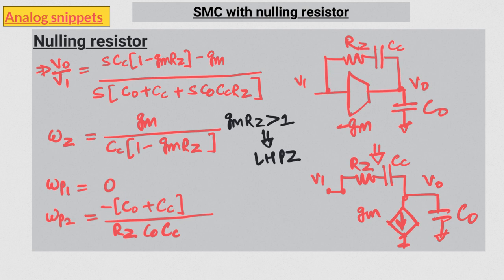The real problem with simple Miller compensation is that the feed forward current overwhelms the transconductance current. This is because as frequency increases, the conductance of the capacitor increases linearly. So it is bound to overtake the transconductance, which is constant, at some frequency.